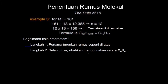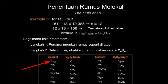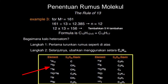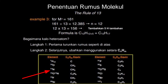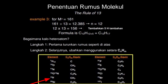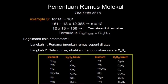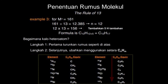Bagaimana kalau ada heteroatom? Langkah pertama, turunkan rumus dasar seperti contoh sebelumnya. Langkah kedua, ubahkan menggunakan setara C_N H_M. Misalnya terdapat oksigen, berarti rumus molekulnya dikurangi CH4. Kalau terdapat nitrogen, dikurangi CH2. Kalau mengandung oksigen dan nitrogen, dikurangi CH4 dan CH2. Kalau mengandung klor, dikurangi CH7. Kalau mengandung silikon, dikurangi CH4. Begitu pula untuk fosfor sampai iod, rumus molekulnya tinggal dikurangi ekivalen masing-masing atomnya.